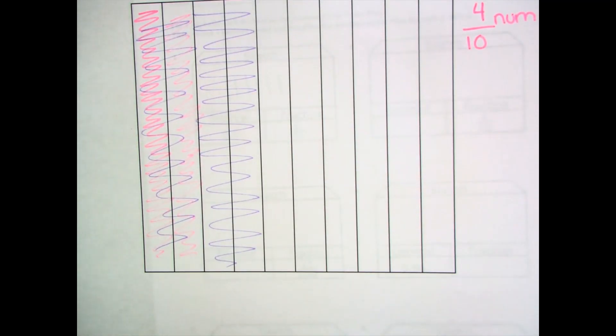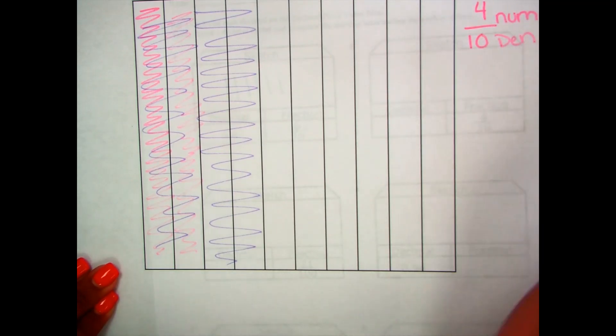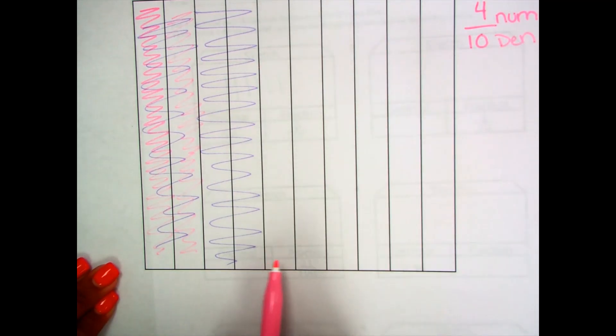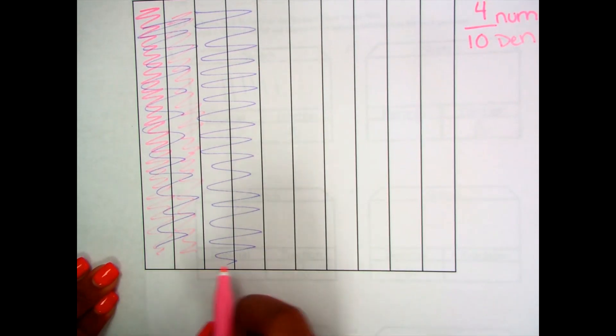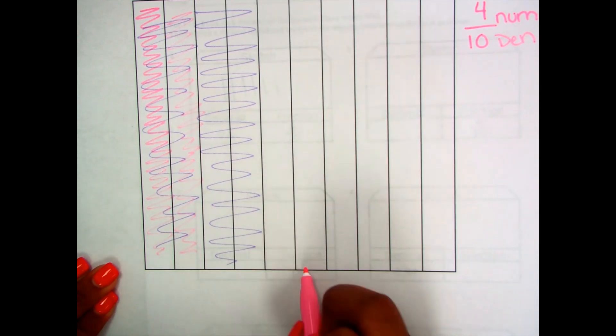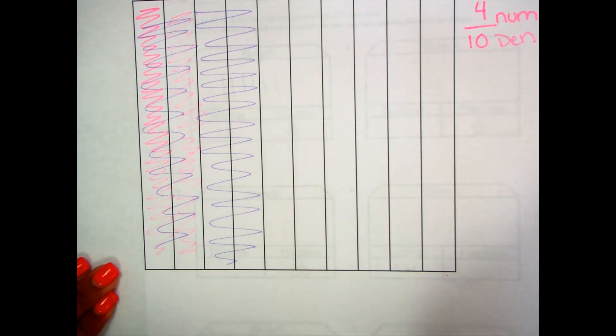My denominator always represents my total. So how many total do I have? Let's see: one, two, three, four, five, six, seven, eight, nine, ten.